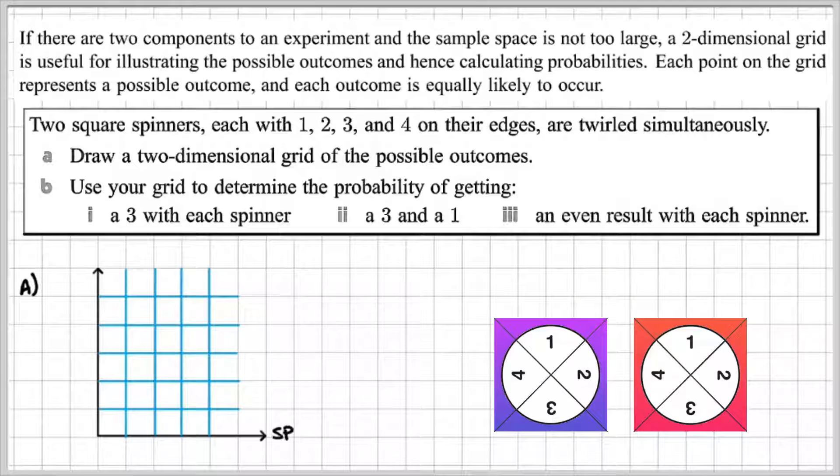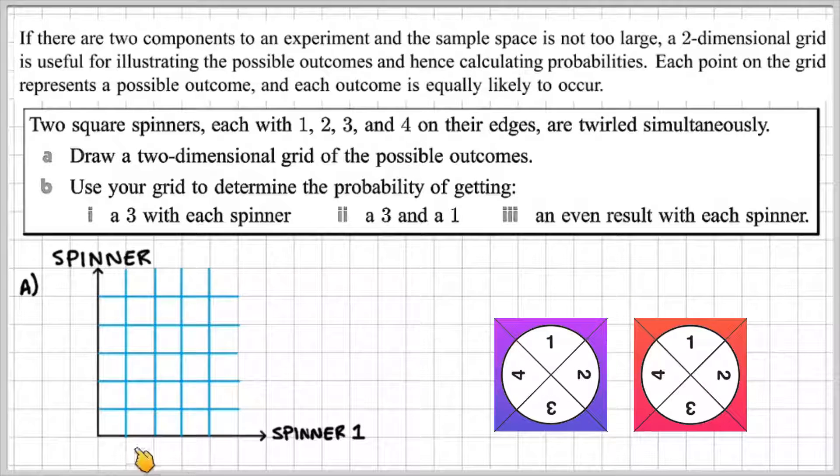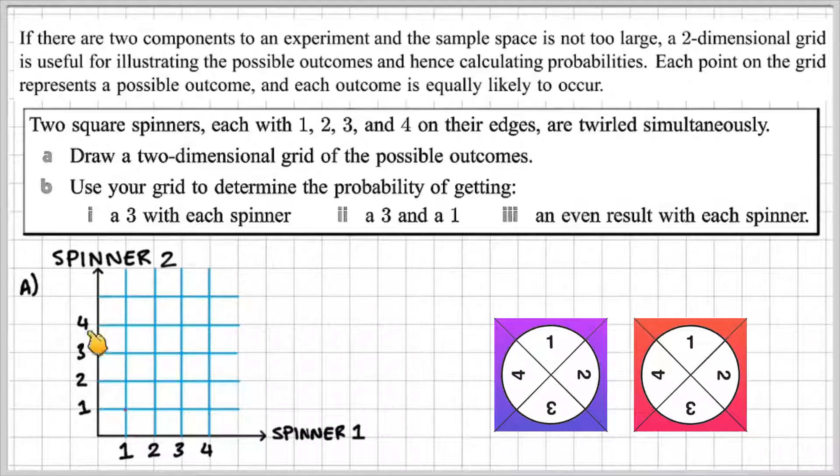So Part A, we'll draw a two-dimensional grid and label the horizontal axis Spinner 1 and the vertical axis Spinner 2. Now we know each spinner has outcomes 1 to 4, so we can label that on our two-dimensional grid. Each point on the grid represents an outcome and in this case we have 16 possible outcomes.